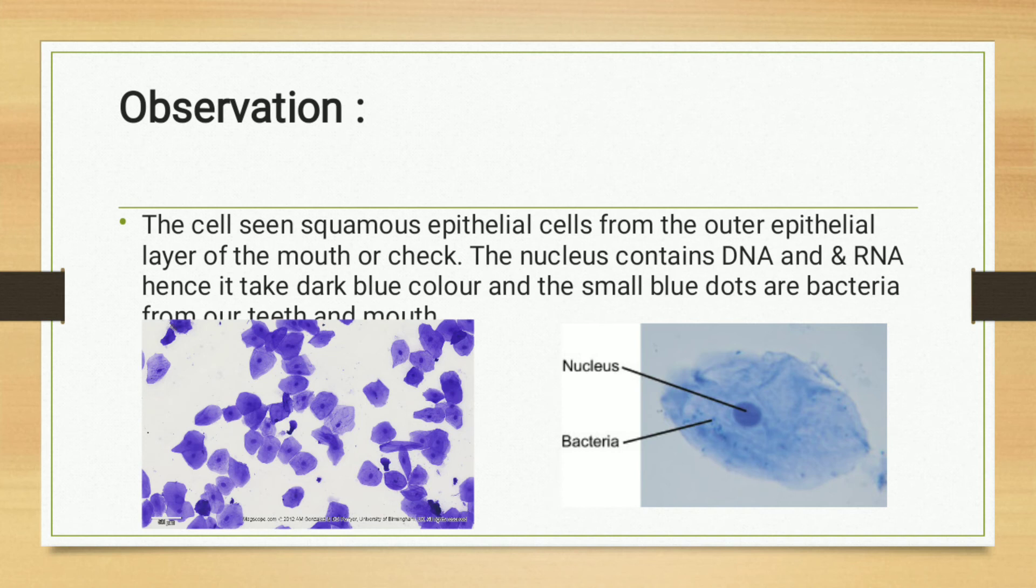These cells contain DNA and RNA, hence they take a dark blue color. These small spots or dots that are present in the cell are bacteria from our teeth and mouth. This is the observation done under microscope. Easily we can see the buccal epithelial cells.